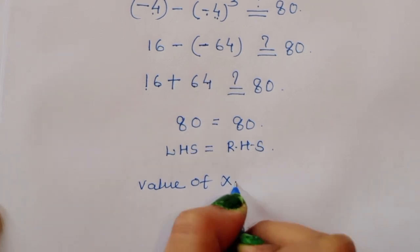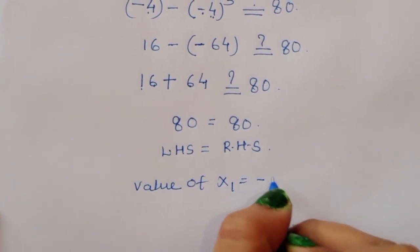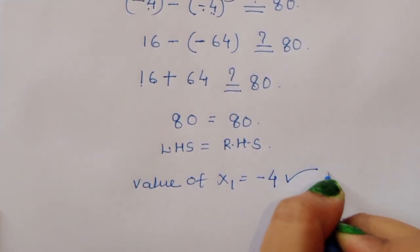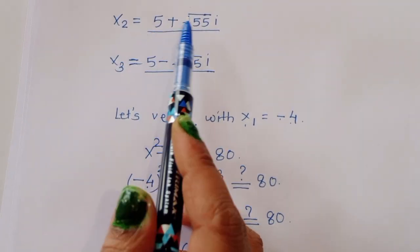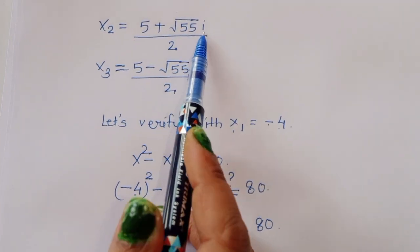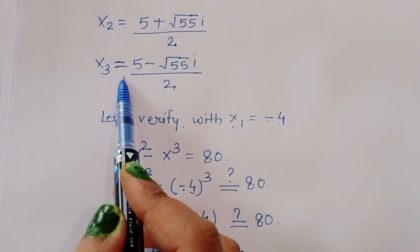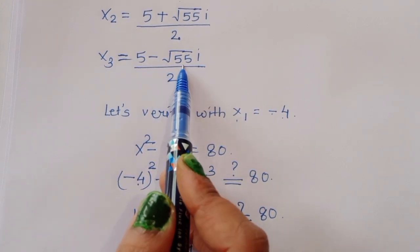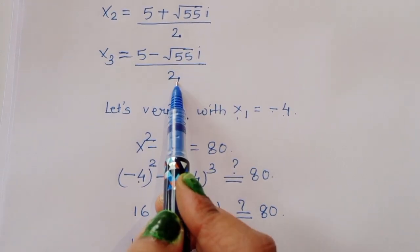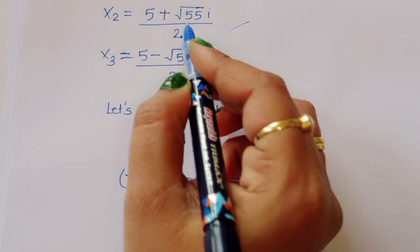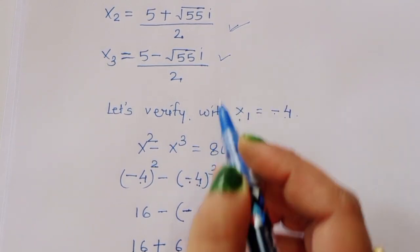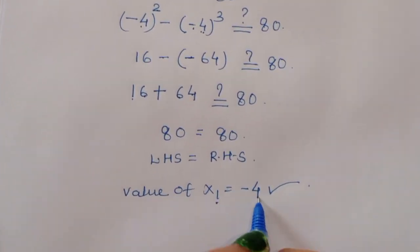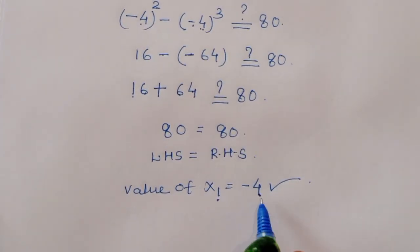So the value of x₁ equals minus 4 is the correct solution. We also got x₂ equals (5 plus square root of 55 · i) divided by 2 and x₃ equals (5 minus square root of 55 · i) divided by 2, but these are imaginary solutions because of i. So we have only one real solution: x equals minus 4. Thank you.